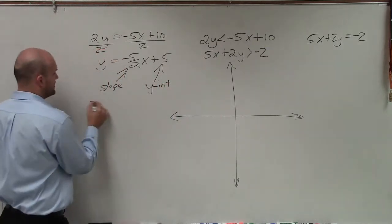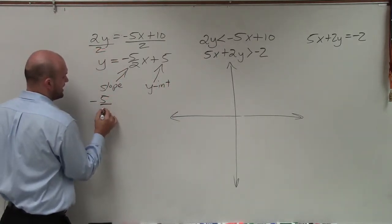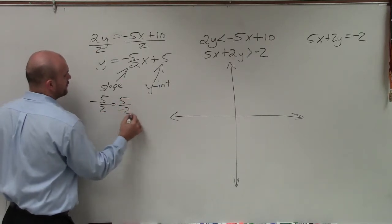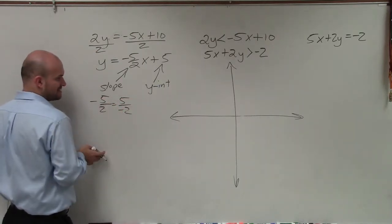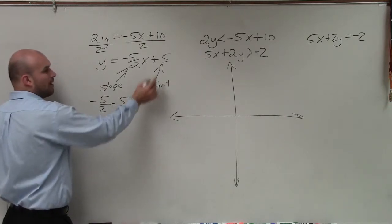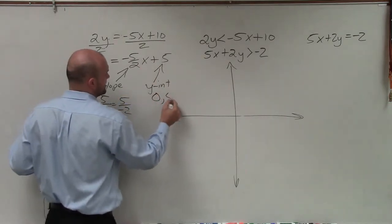So when graphing the slope, we need to understand that we could rewrite slope as negative 5 over 2, or we could write it as positive 5 over negative 2. They still represent the exact same answer or slope. Y-intercept, we always want to remember that is a coordinate point.